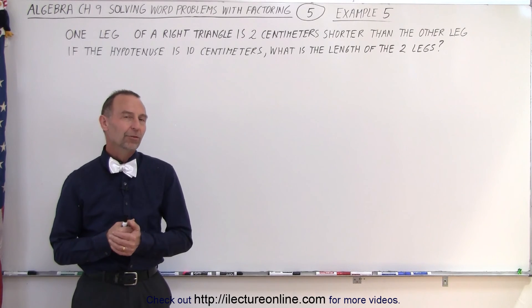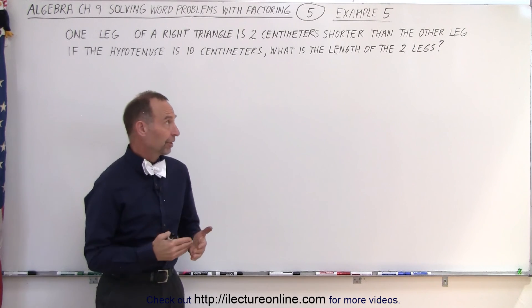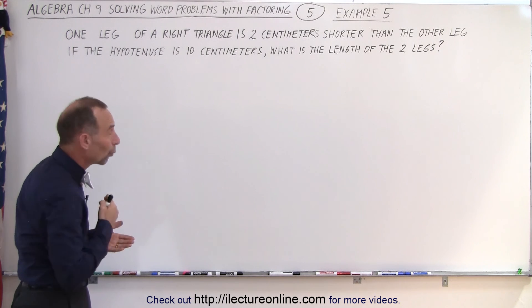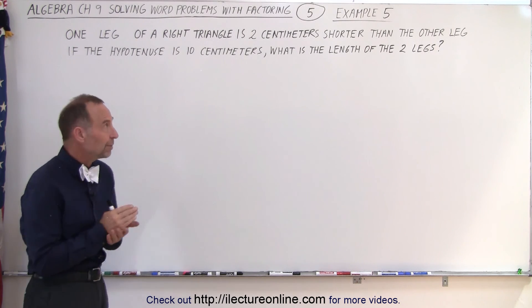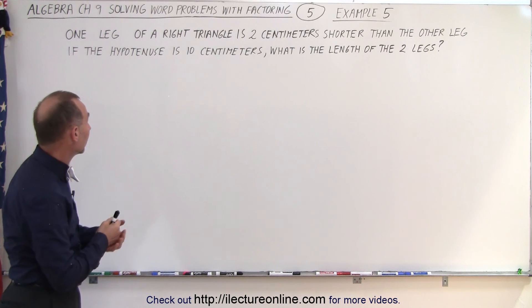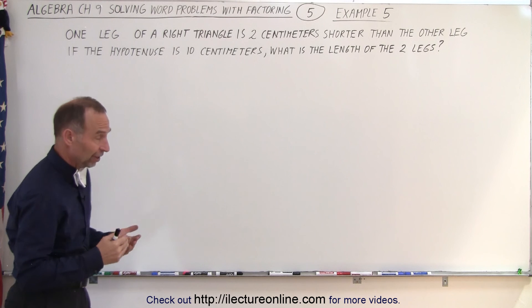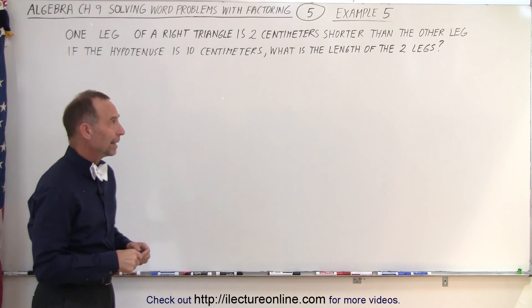Welcome to iLectureonline. Now let's do a problem with a geometric figure. In this case we have a right triangle and they're telling us that one leg of the triangle is two centimeters shorter than the other leg. If the hypotenuse is 10 centimeters, what is the length of the two legs?